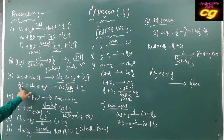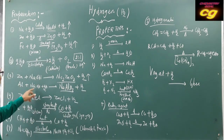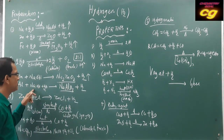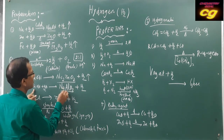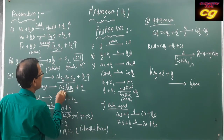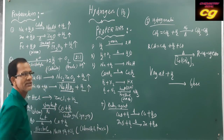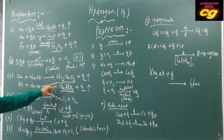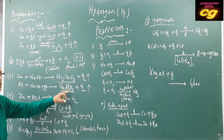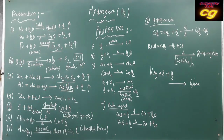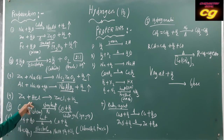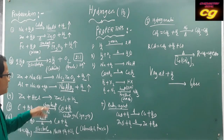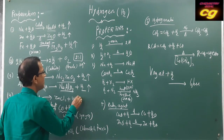Aluminum metal reacts with NaOH and also produces sodium metaaluminate and hydrogen gas. You have to remember these formulas — sodium zincate and sodium metaaluminate. Metals also react with acids to produce salt and hydrogen gas.